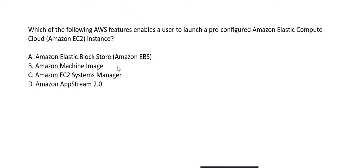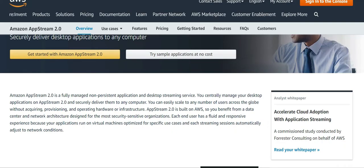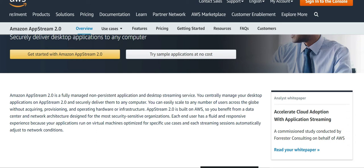Looking at the other options: Amazon Elastic Block Store is just storage for an EC2 instance — incorrect. EC2 Systems Manager is used to manage Auto Scaling Groups and similar tasks — not a pre-configured EC2 instance. AppStream is a fully managed non-persistent application and desktop streaming service, nothing to do with pre-configuration.